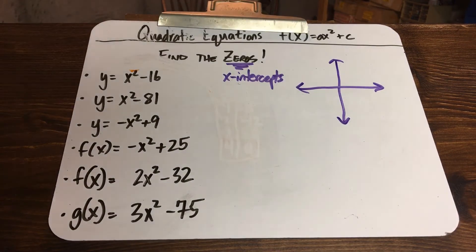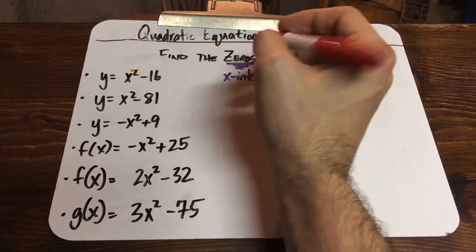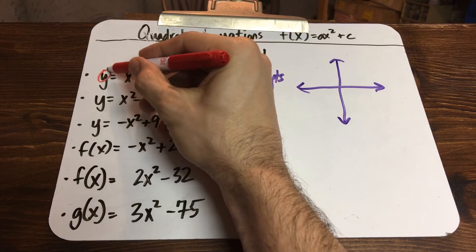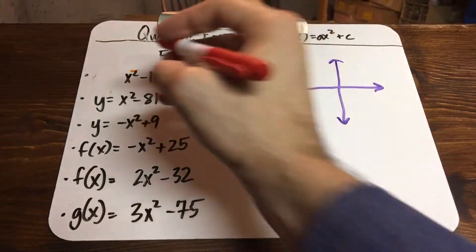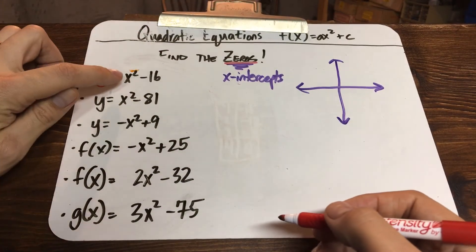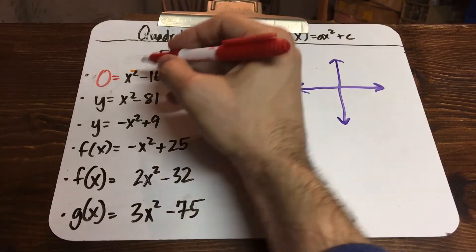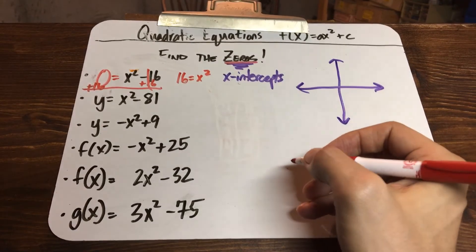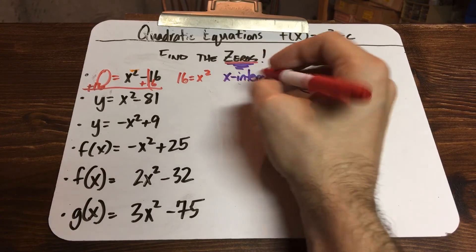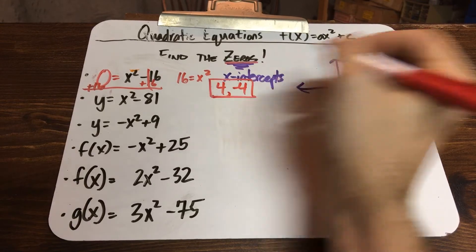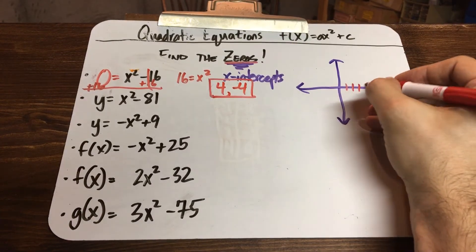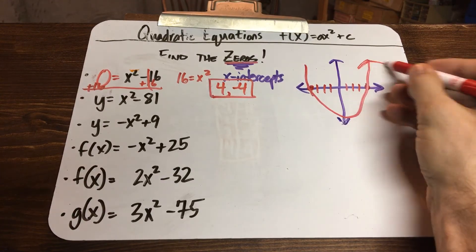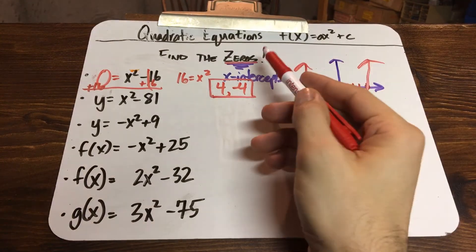The easier method: replace the letter y or f of x with a zero and then solve the equation. For x squared minus 16 equals zero, add 16 to both sides to get 16 equals x squared. What number to the second power equals 16? That's the square root of 16, which is 4 and negative 4. So this graph touches the x-axis at 4 and at negative 4 — two x-intercepts, two zeros, two roots.